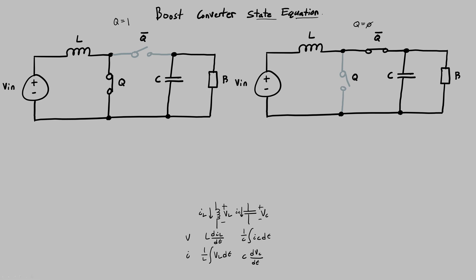So now here's the state equation derivation. Just like the buck converter, we're going to separate out the two different switch states in the model circuit. Starting off with the left one, we can just do KVL right here, and this is a KCL right there. Doing KVL on this node loop, you just end up with V_in minus the L differential current in your inductor, so that's the voltage across the inductor.